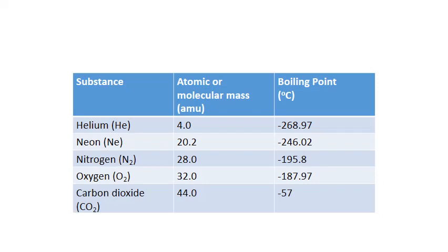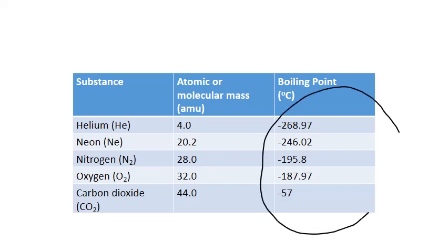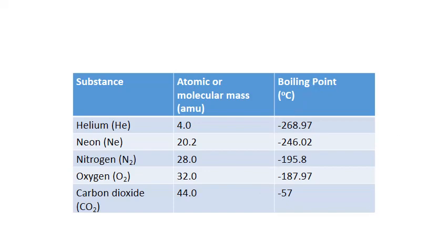Let me start with a simple example of the impact of molecular polarity in our world. This is a list of several simple elements and compounds and their boiling points. Notice that the boiling points are all well below zero degrees Celsius, indicating that they are actually found as gases under normal ambient conditions. There is also a relationship between the boiling point of each substance and that substance's molecular or atomic mass — the smaller the molecule, the lower the boiling point, and the less energy is needed to move it from the liquid to the gas phase. That's why larger molecules tend to be liquids and solids at ambient temperatures, while smaller molecules are more likely to be gases.